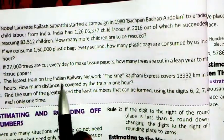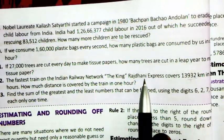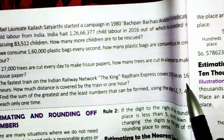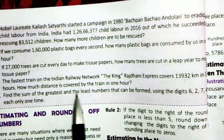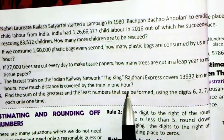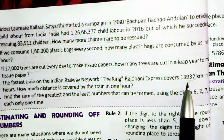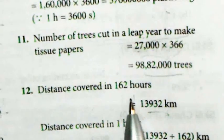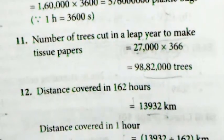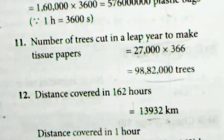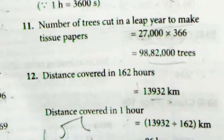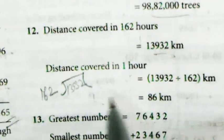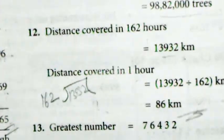Next: the fastest train of Indian railways, the Rajdhani Express, covered 13,932 km in 162 hours. How much distance does the train cover in 1 hour? Since it covers that distance in 162 hours, we divide 13,932 by 162. Student, yahan pe long division dikhani hai — 162 into 13,932 gives the answer.